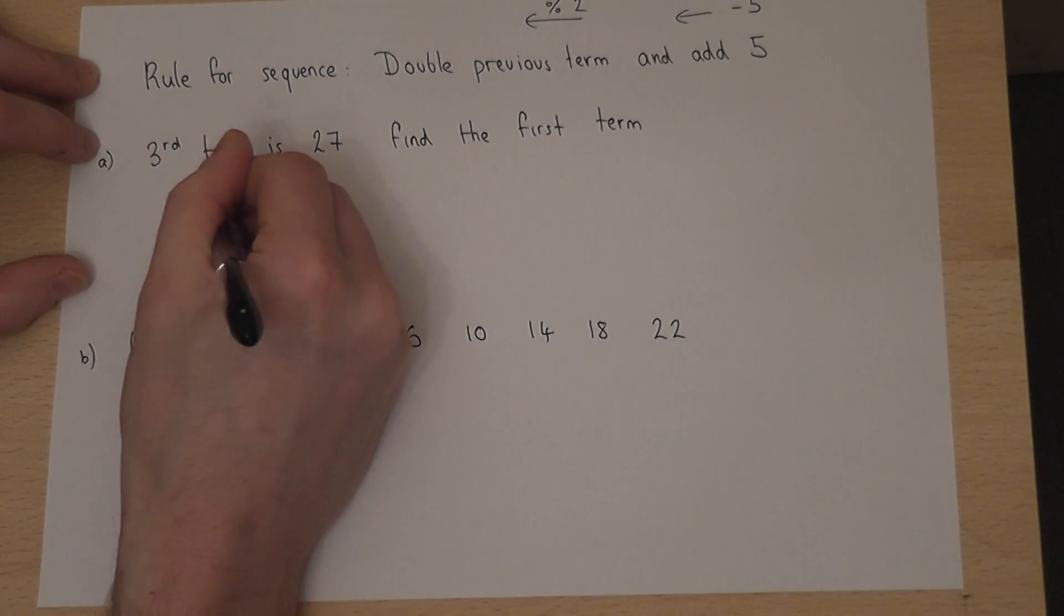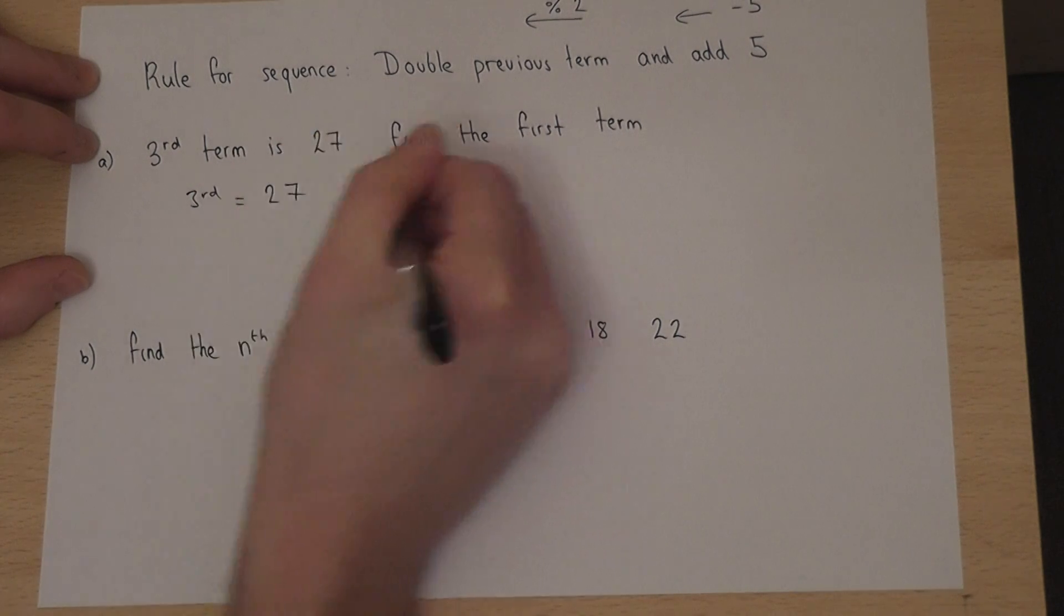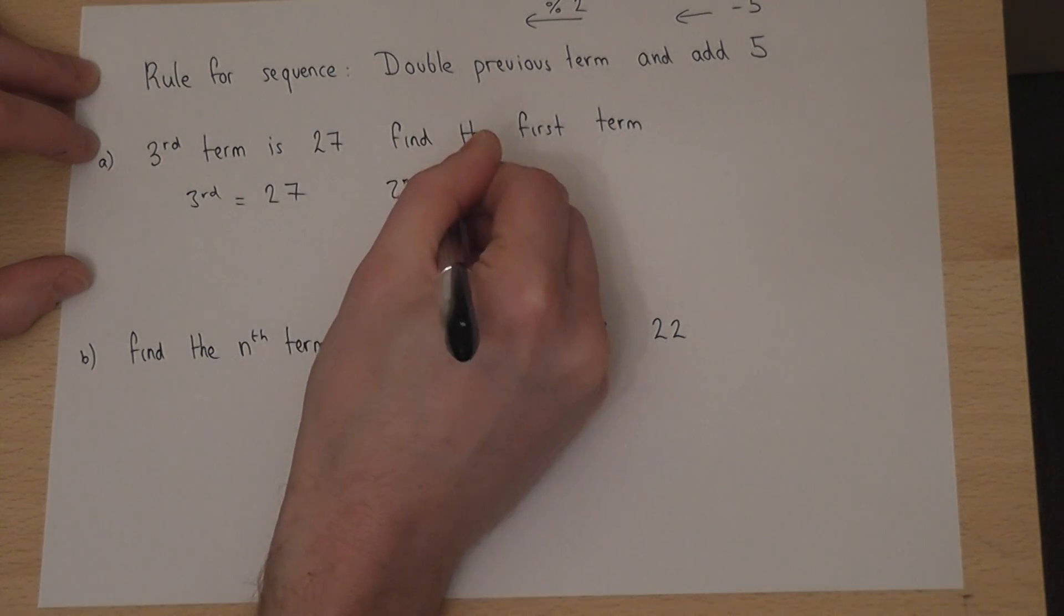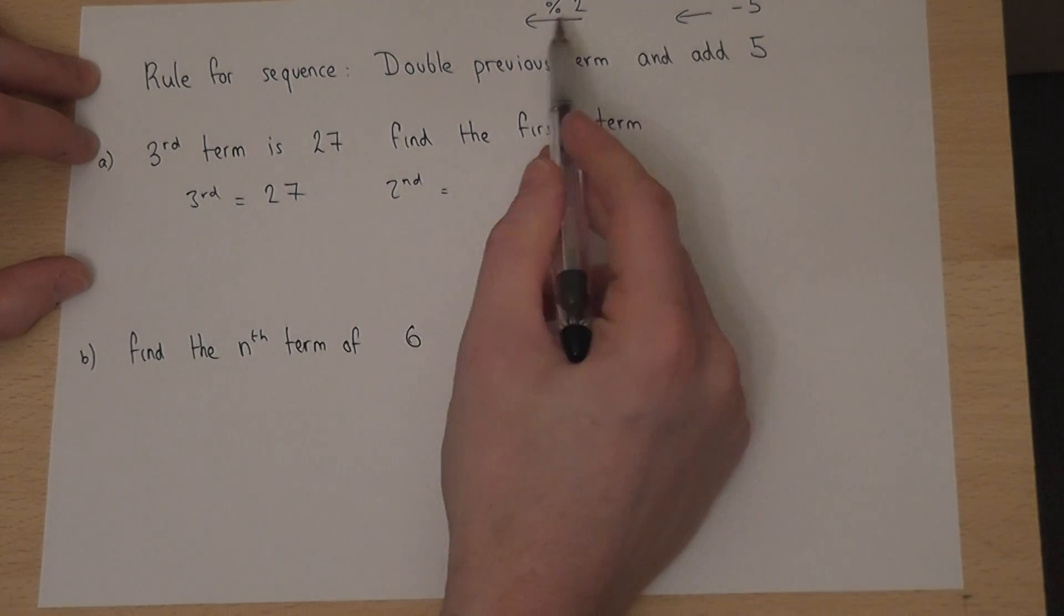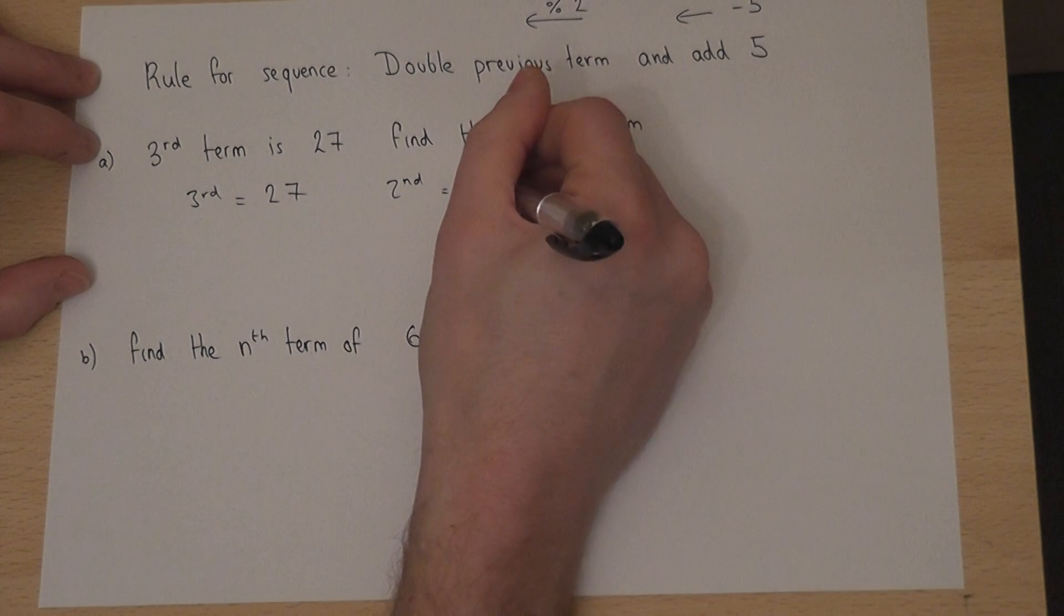So the third term is 27. So the second term, 27 take 5 is 22. Then divide by 2 is 11.